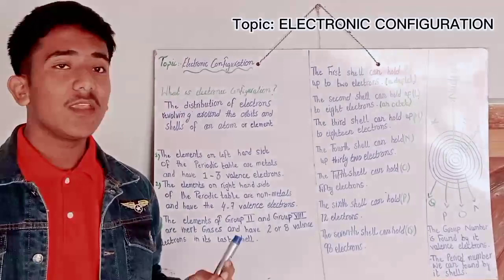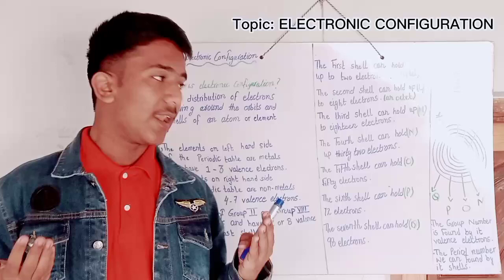The sixth shell can hold up to 72 electrons and it is called P shell. The seventh shell can hold up to 98 electrons and it is called Q shell.